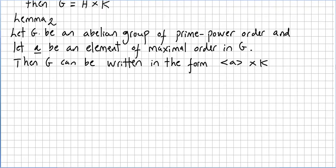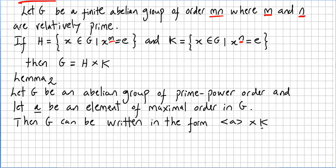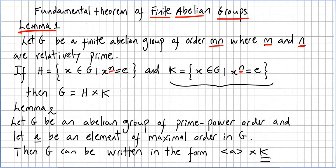The second lemma, also proved in the previous video: let G be an abelian group of prime power order and let A be an element of maximal order in G. Then G can be written as the product of K times the set generated by A.